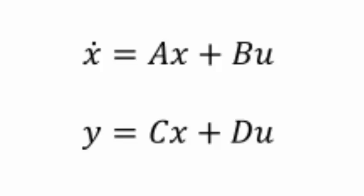And x dot is the rate of change of the state variables with respect to time.